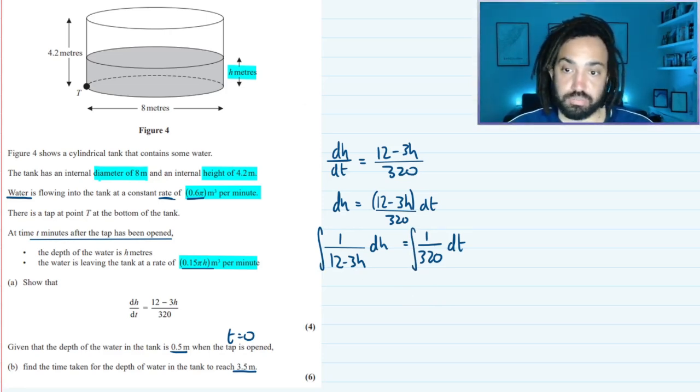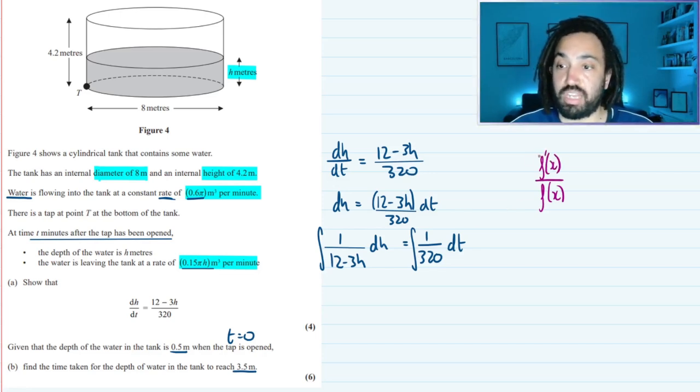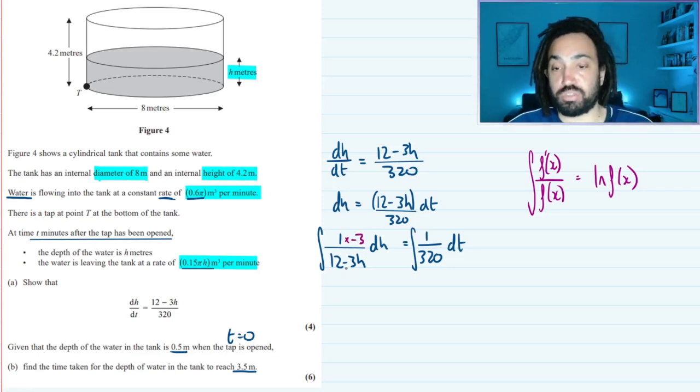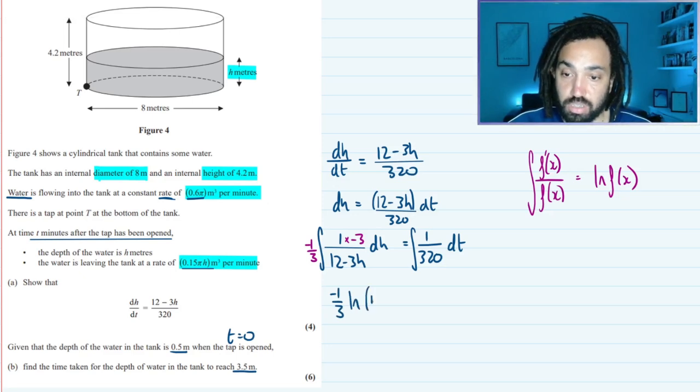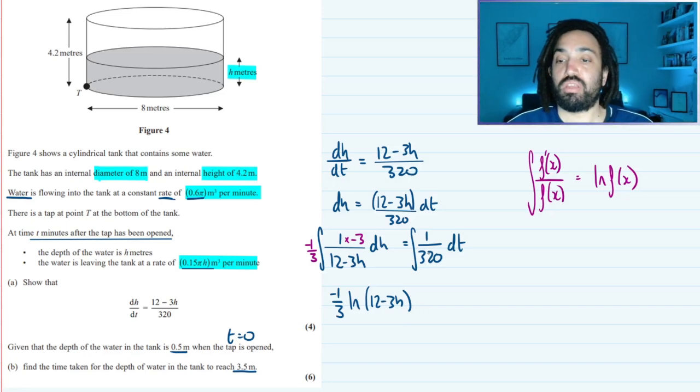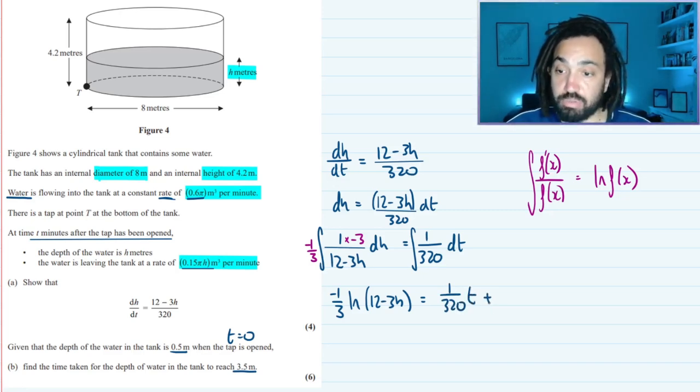So what's this going to integrate to? Well we can use what I call the ln rule when you have a function of x and you have a derivative on the top. Then that integrates to ln of the function of x. But the derivative is not quite the derivative on top. In fact we'd have to multiply through by minus 3 because the derivative of the bottom is minus 3. So to counteract that I'm going to take a minus a third out of the integral so they balance. So now that integrates directly to minus a third ln(12 - 3h). And then the right hand side integrates to just 1/320 t plus c. We only need to put it on one side.